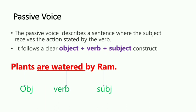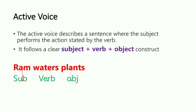So when you say the same thing in two different ways, that is active and passive voice. Now we will understand the difference between the two. In active voice, the sentence structure is: first subject, then verb, then object. The subject performs the action stated by the verb — the subject performs the action.